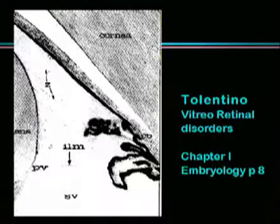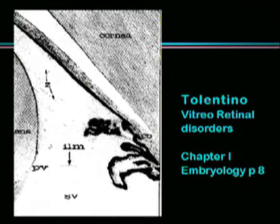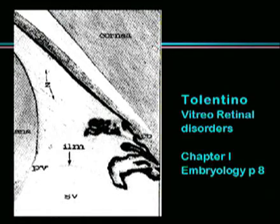Fibers of the anterior vitreous base share with the zonular system a common embryologic origin: the ciliary epithelium. They follow the curve of the posterior lens capsule of the zonular system's ciliary processes, pars plana, and of the anterior retina adjacent to the ora serrata.